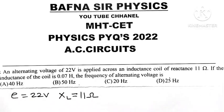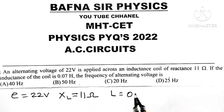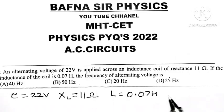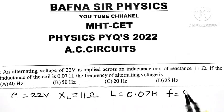If the inductance of the coil L is equal to 0.07 henry, then we have to find out the frequency of alternating voltage f.